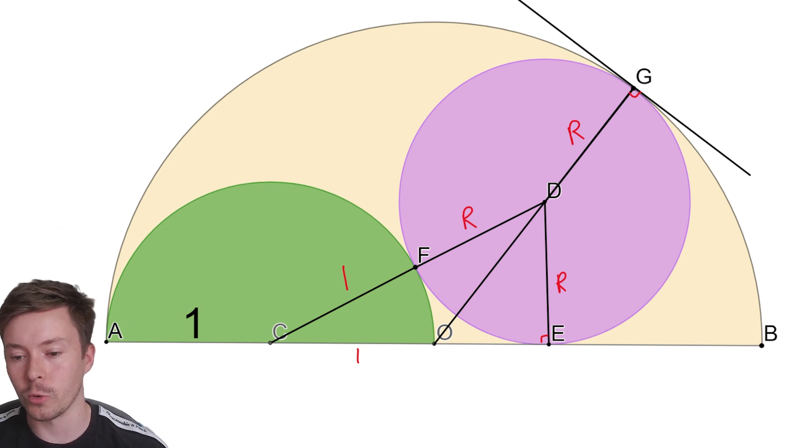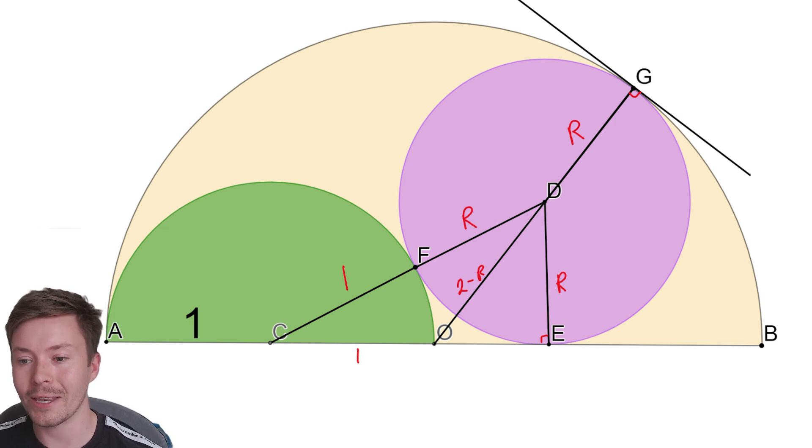That then leads you on to the two right angle triangles which you can see. We can also label, before we get into doing anything with these right angle triangles, 2 minus R, because the radius of the yellow semicircle is 2, and so this must be 2 minus R because we're taking away the R that we've already got. We can label this side X, from O to E, because we don't know what that is but we can work it out.